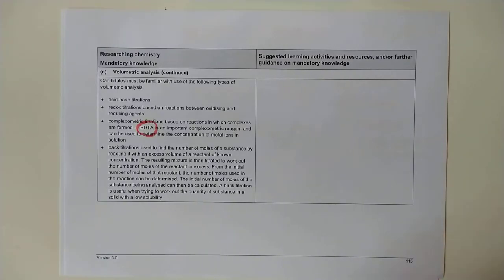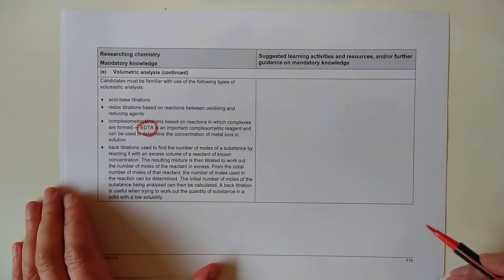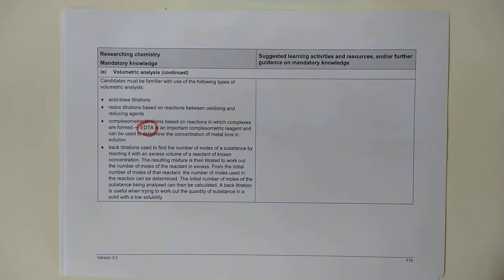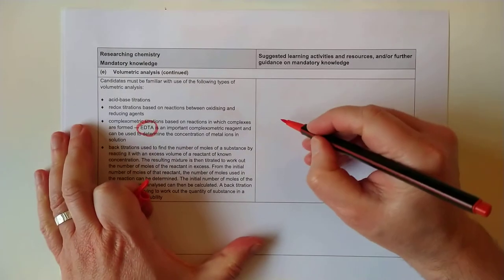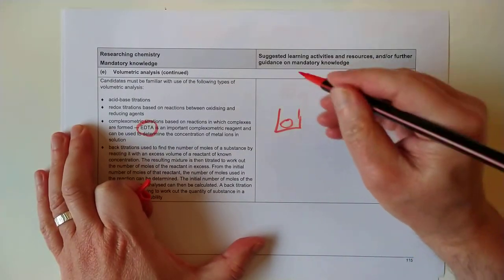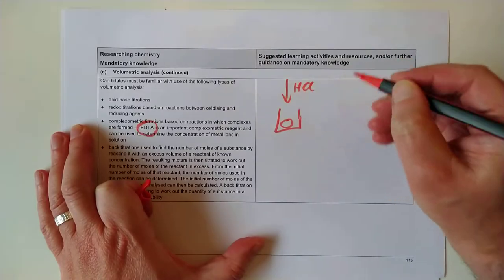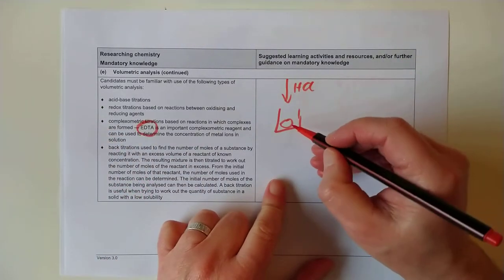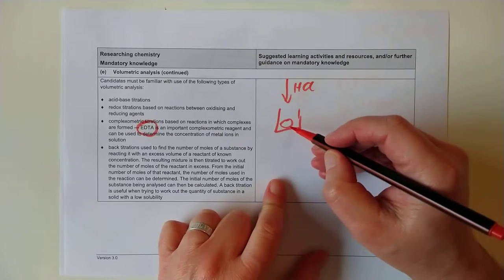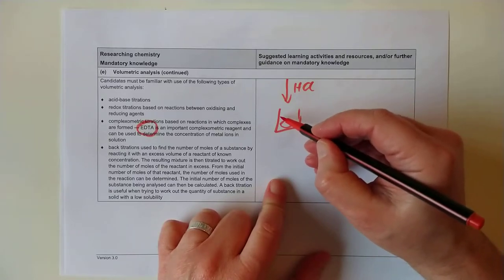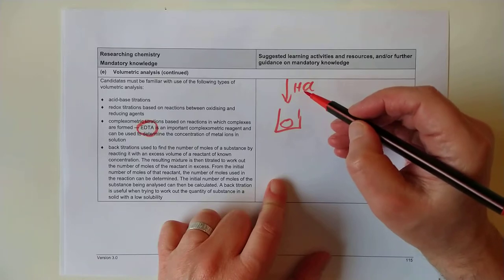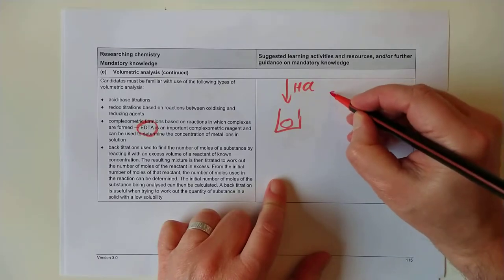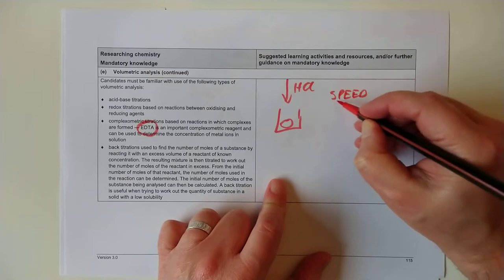Back titrations have to be used under two usual circumstances. Number one, if the chemical you're titrating, for example, calcium carbonate in eggshells. If you're titrating calcium carbonate with hydrochloric acid, in theory, you could do that. There's my egg, and there's my HCl. Unfortunately, the reason you can't do it in practice is because the reaction is so slow. You have to wait 10 minutes in between adding each drop. Now, if you don't have an entire life to spare, what you can do is you can do a back titration. So, speed might be a reason you need to do these back titrations.